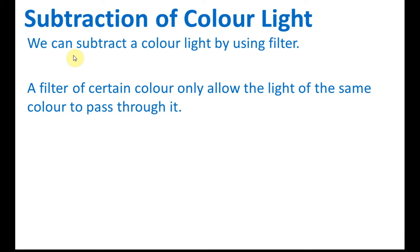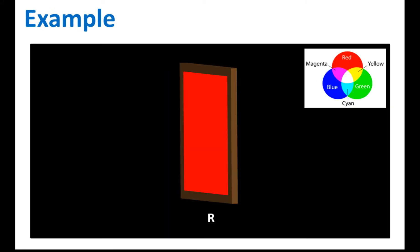Subtraction of color: we can subtract a color light by using a filter, which means we can remove a color light. A filter of a certain color only allows the light of the same color to pass through it. Always remember this. Let's see an example.